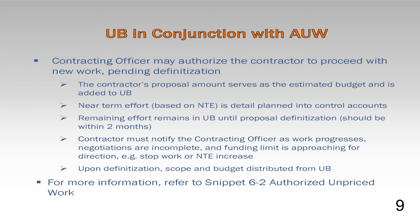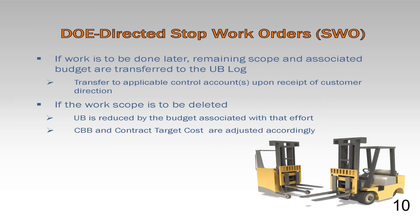The preferred practice is for undistributed budget to be distributed to the applicable Summary-Level Planning Packages, SLPPs, or control accounts by the end of the ensuing reporting period after contract definitization takes place. When the contractor receives a full or partial stop work order, or SWO, the subsequent process involves the UB and CBB, or PBB logs. If the work is to be done later, then the contractor should transfer the applicable remaining scope and associated budget to the undistributed budget log where it is maintained until DOE direction is received. The contractor continues to report the UB in the monthly IPMR or CPR, with an applicable stop work order discussion in Format 5. Upon direction from the DOE contracting officer to resume the work, the contractor allocates the UB to the control accounts according to its internal procedures.